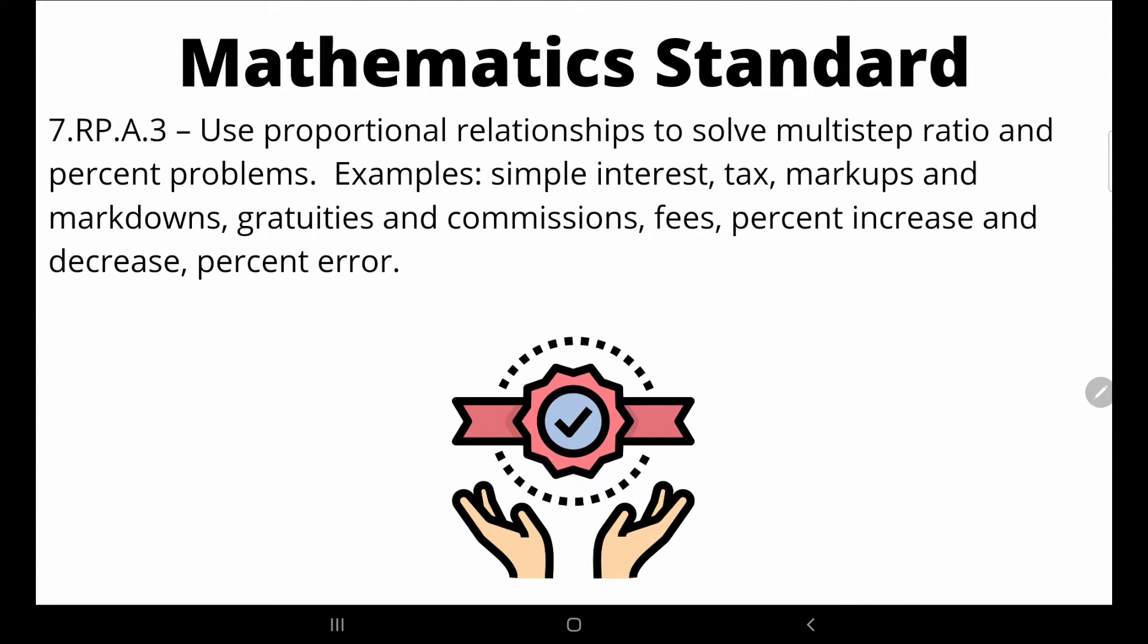Hi everyone, welcome back. Today we're going to be looking at standard 7.RP.A.3: Use proportional relationships to solve multi-step ratio and percent problems. Examples include simple interest, tax markups and markdowns, gratuities and commissions, fees, percent increase and decrease, and percent error.